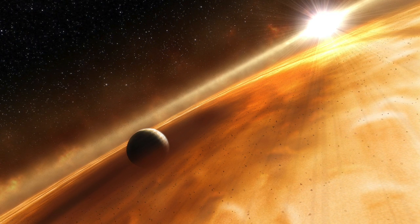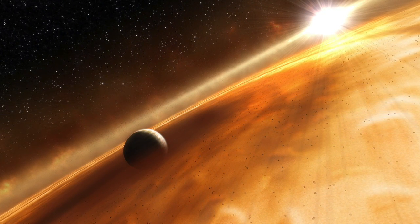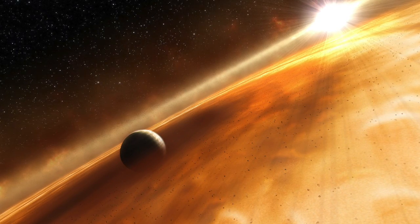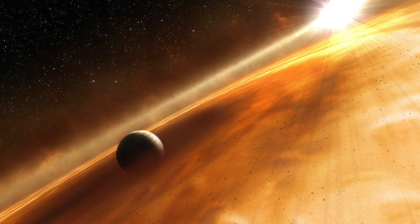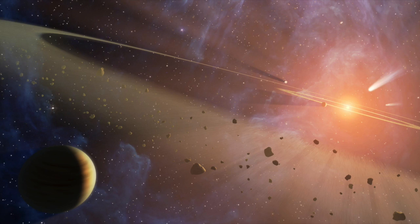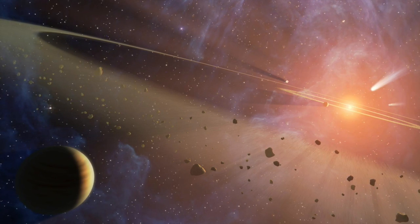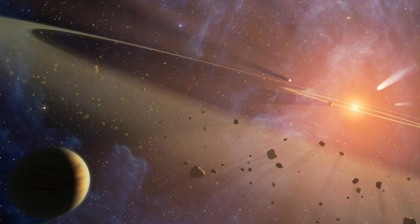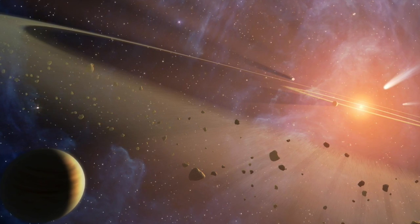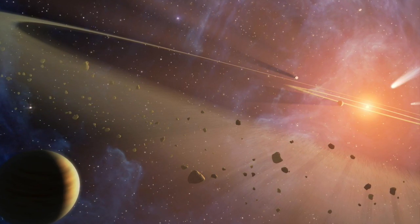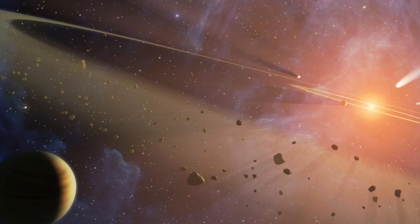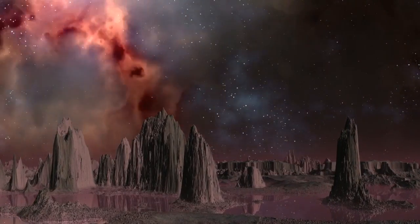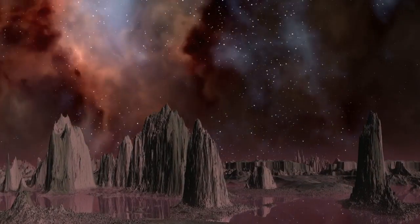Young stars can have circumstellar disks of material around them. That means that dust clumps within these disks can produce some odd light curves. But with this, you would see infrared emissions as the dust would be warmed by the star. This hasn't been seen, and these disks are typically found around young stars. HD 139139 isn't young, and again, the light curve reveals that these objects really do look like planets, as opposed to messy dust.